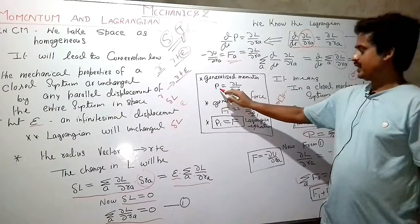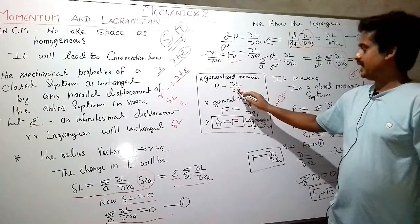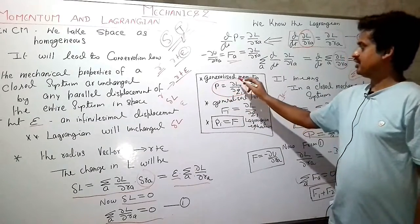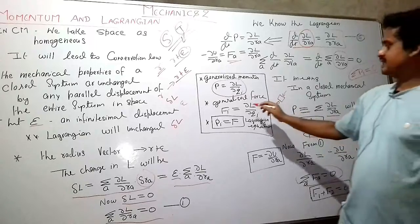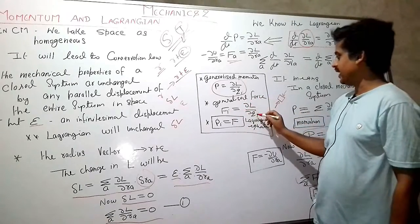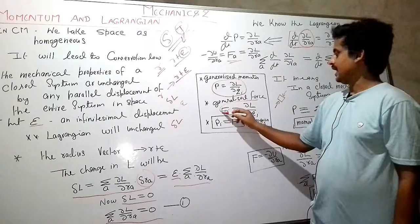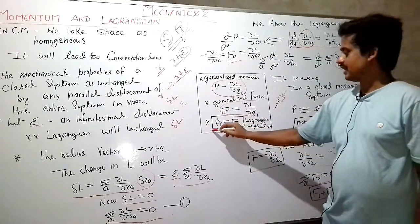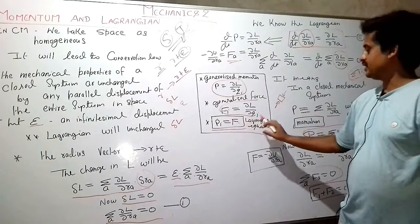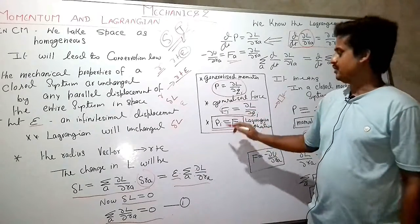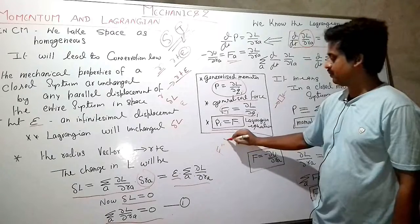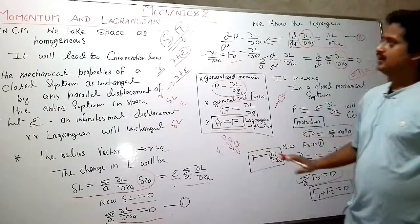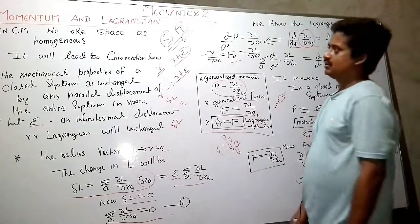The generalized momentum is p = ∂L/∂q̇, which is the formula for generalized momenta. The generalized force is F_i = ∂L/∂q_i, and the rate of change of momentum is called force. This gives the Lagrangian equation for momentum: F = ṗ, or dp/dt.